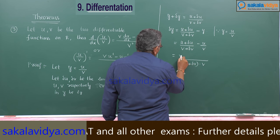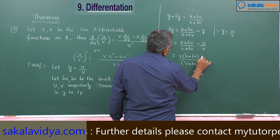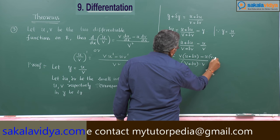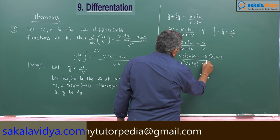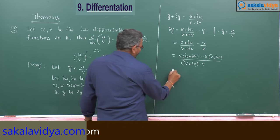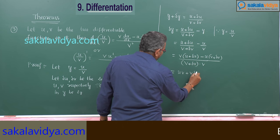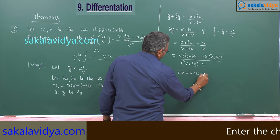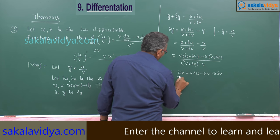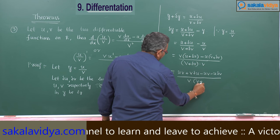So delta y equals v times (u plus delta u) minus u times (v plus delta v), all over v(v plus delta v). Let us simplify: the numerator expands to v*u + v*delta u minus u*v minus u*delta v, giving v*delta u minus u*delta v over v(v plus delta v).